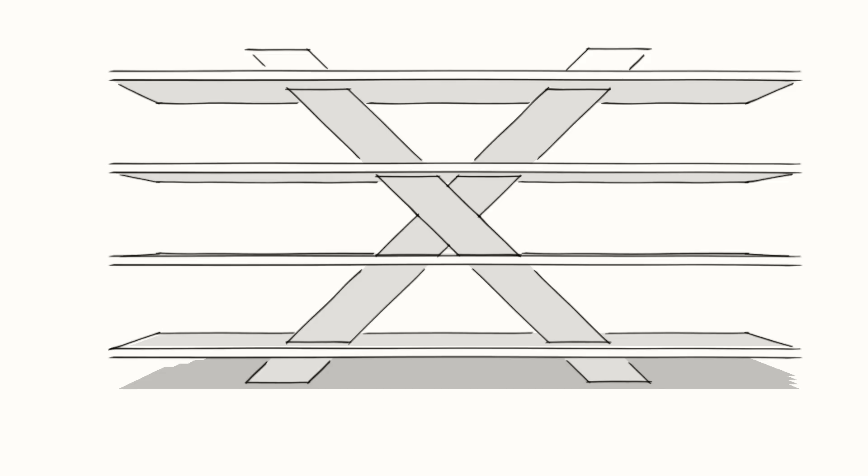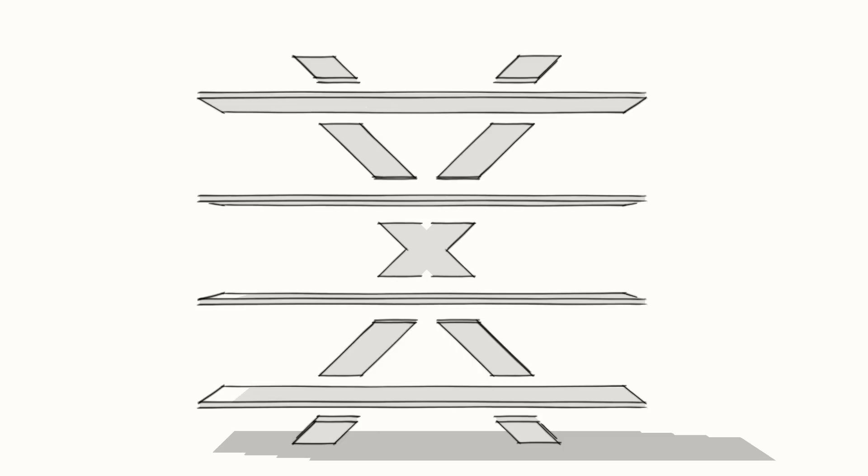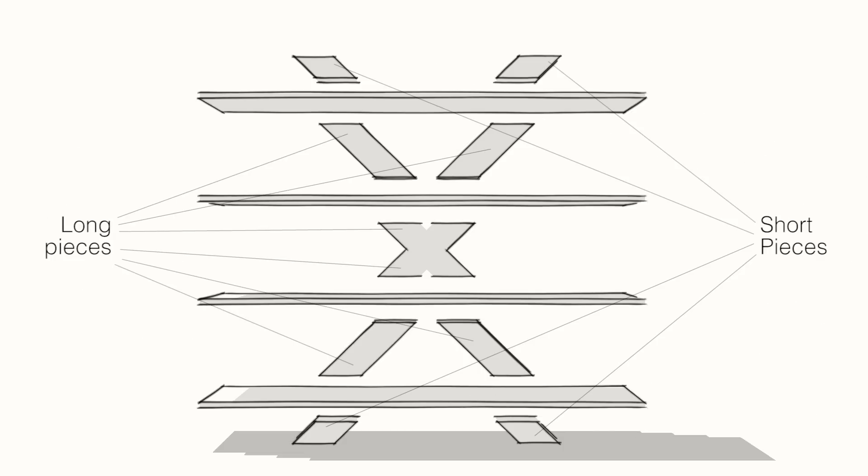So as you probably figured out by now, the idea that this piece is one intact X is an illusion. It's actually just a bunch of separate pieces that look like an X once everything is put together. In total I needed 6 of the longer pieces and 4 of the shorter pieces that go on the ends.